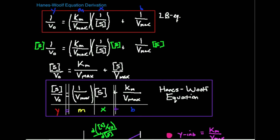So if you plot one over V0 versus one over substrate concentration, you get a straight line. Now what I can do is multiply each of these three terms by the substrate concentration. So I multiply one over V0 times substrate concentration, multiply the Mx term times substrate concentration, and multiply one over Vmax times substrate concentration. What I ultimately get is substrate concentration over V0. Notice here the substrate concentrations cancel, so I'm left with Km over Vmax, and then we add the substrate concentration over Vmax.